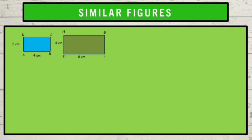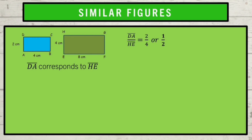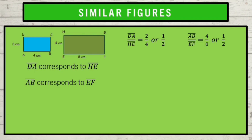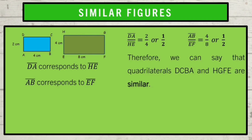Angle B corresponds to angle F and they both measure 90 degrees; therefore, angle B is congruent to angle F. Angle A corresponds to angle E; they both measure 90 degrees; therefore, angle A is congruent to angle E. Now let us compare corresponding sides. Segment DA corresponds to segment HE; therefore, the ratio is 2 over 4, or 1 half. Segment CB corresponds to segment GF; therefore, the ratio is 4 over 8, or also 1 half. You can see that corresponding angles are congruent and corresponding sides have a common ratio. Therefore, we can say that quadrilaterals DCBA and HGFE are similar.